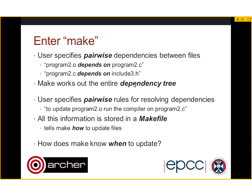How does Make know when to update? The important point is Make compares the date stamps of files. If you say program2.o depends on program2.c, it looks at when they were last modified. If program2.c was modified more recently than program2.o, it recreates program2.o using the rule in your Makefile. To summarize: you write a Makefile containing pairwise dependencies between files and rules for creating files from other files. Make looks at date stamps to decide whether something needs to be updated.